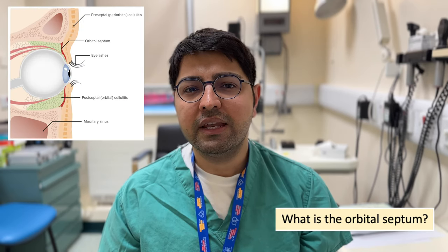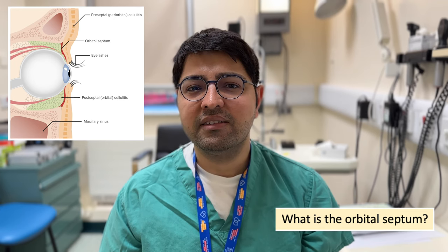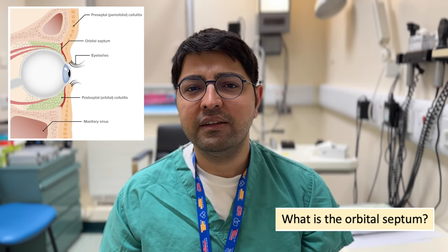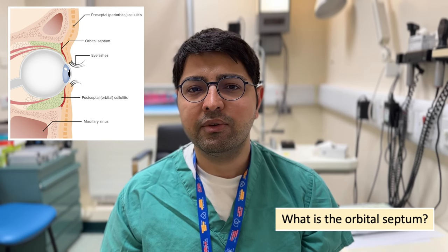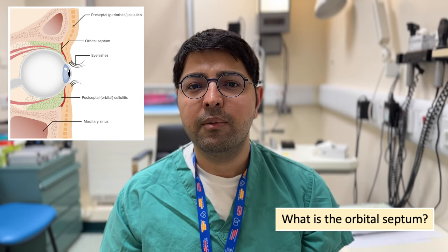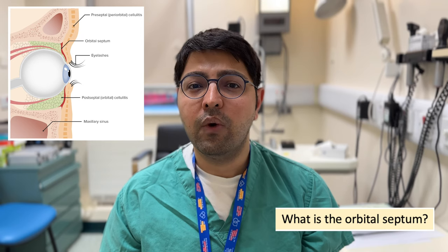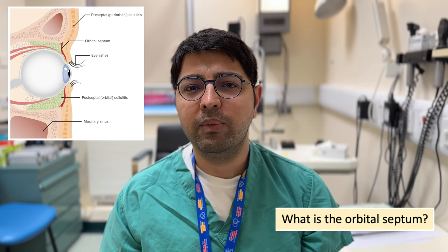The first thing to grasp is what the orbital septum is. If you look on screen now, you can see the orbital septum is a very thin transparent membrane and it essentially serves as a barrier between the superficial eyelids and the contents within the eye. If an individual has preseptal cellulitis, as the name suggests, it involves the structures anterior to the septum and is less worrying in terms of the possibility of causing sight loss and more worrying complications.